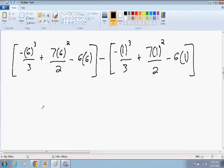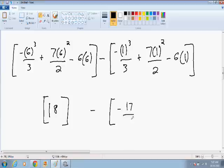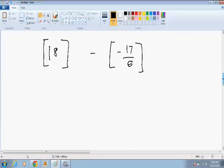This first set of parentheses simplifies and just becomes 18. And the second set of parentheses simplifies and becomes negative 17 over 6. So the area is equal to 18 minus negative 17 over 6 which is 125 over 6.